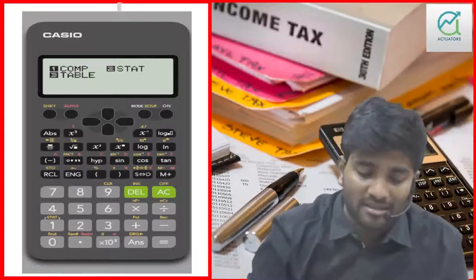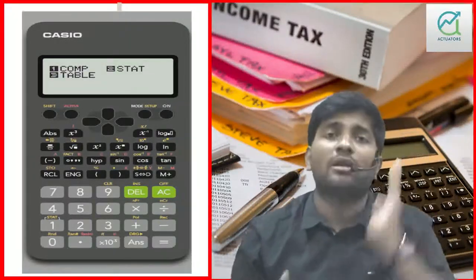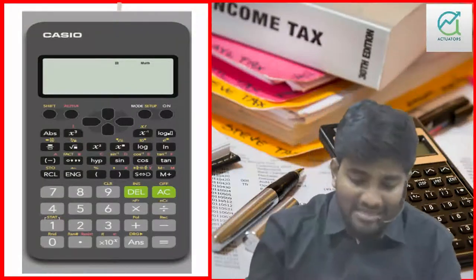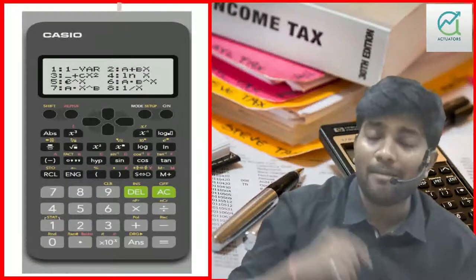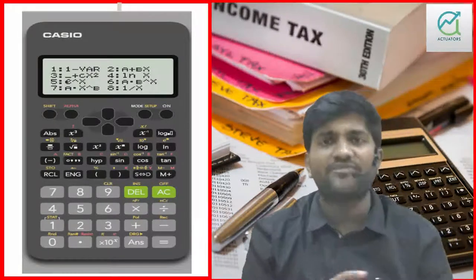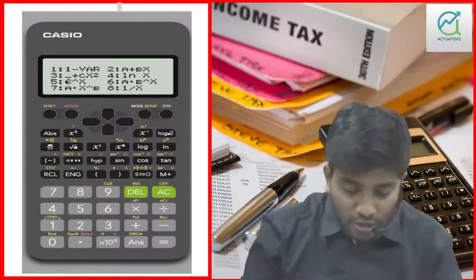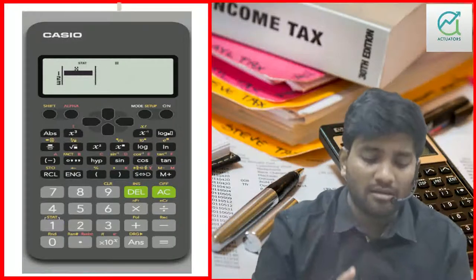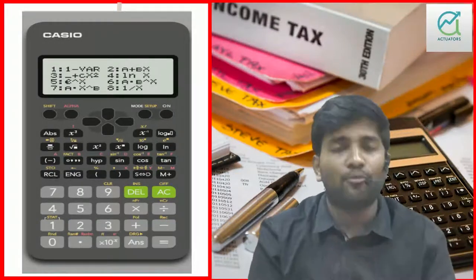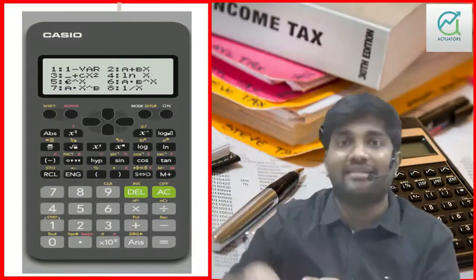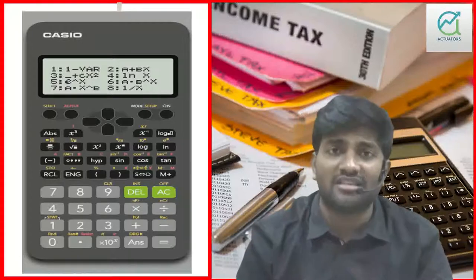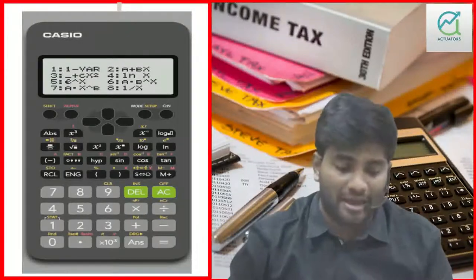Since I am going to calculate statistics, I am going to go into stat mode. Normally we are in mode 1. I will press mode 2 to enter stat mode. I can also add two variables for correlation and regression — the correlation coefficient small r can also be calculated directly in this calculator. But now I am going to work with one variable.